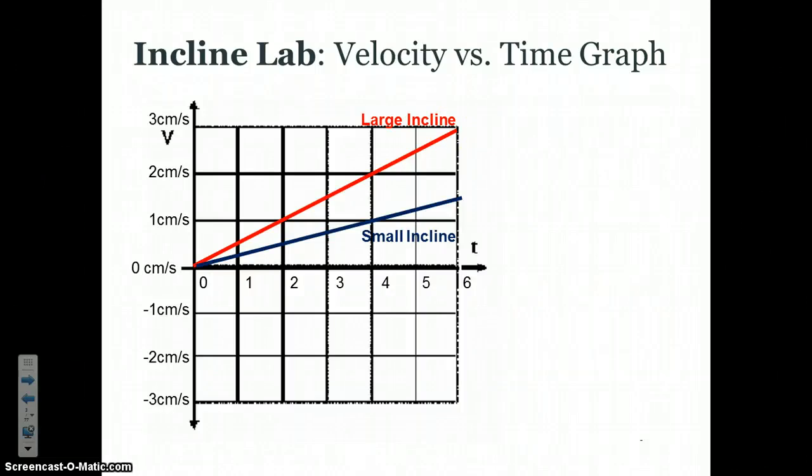For our spinner lab, where we looked at the relationship between velocity and time for an object moving down an incline and speeding up, when we looked at all of our whiteboards, they fell into two basic categories. The velocities all started at about zero and increased linearly over time. There was a consistent increase in speed or velocity.